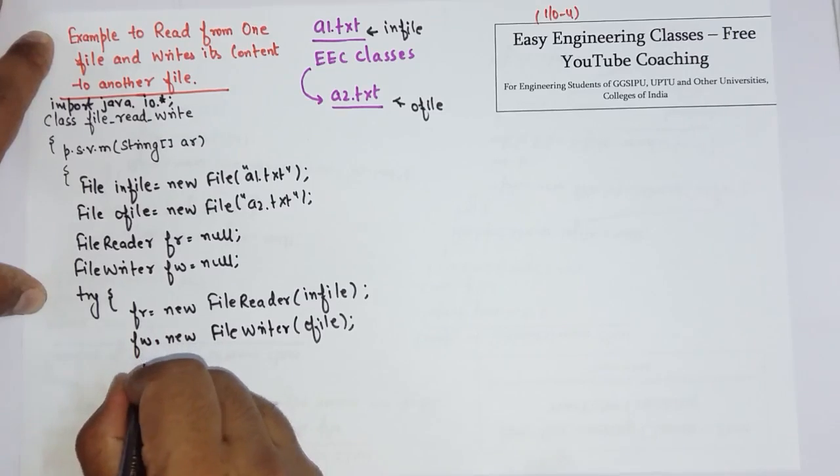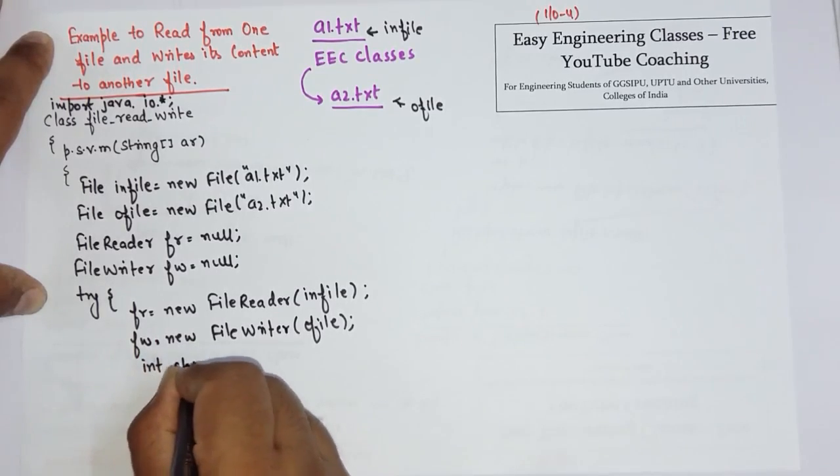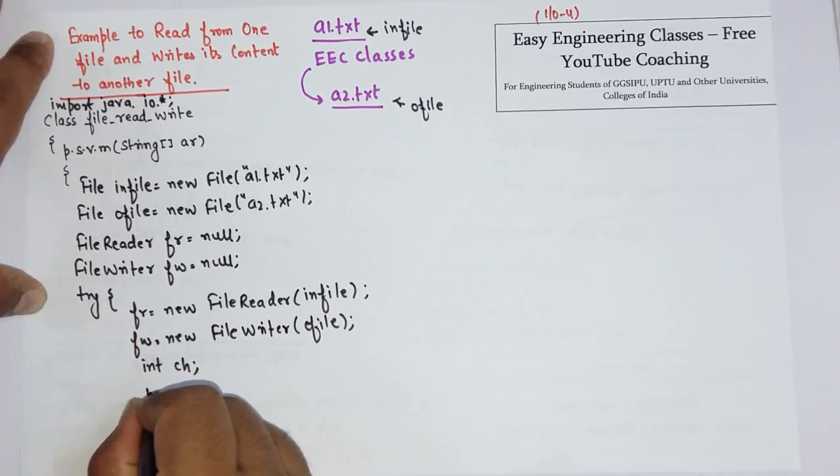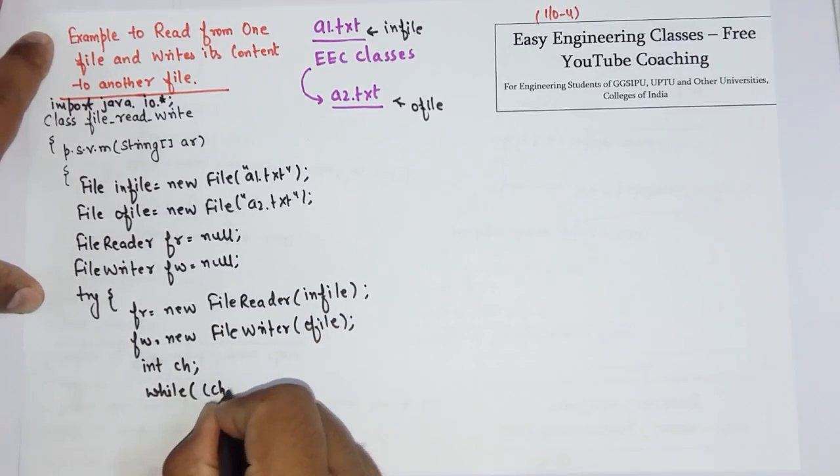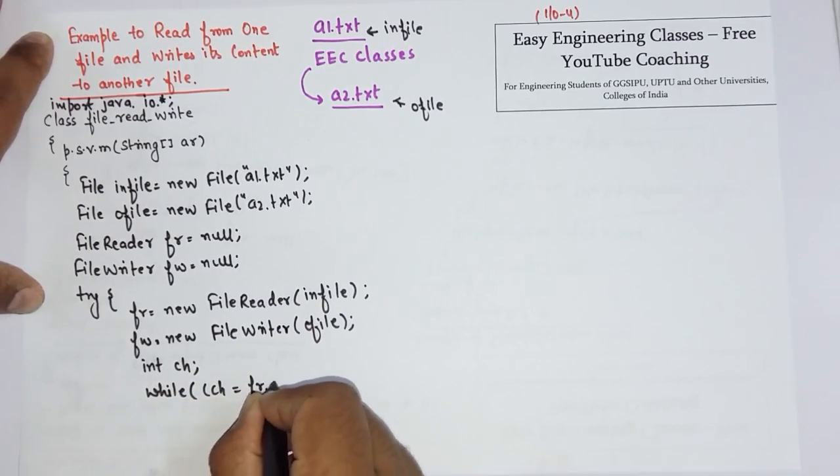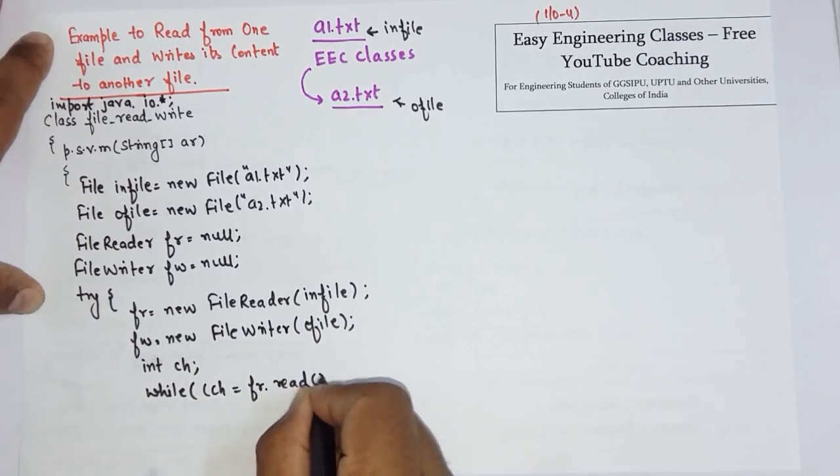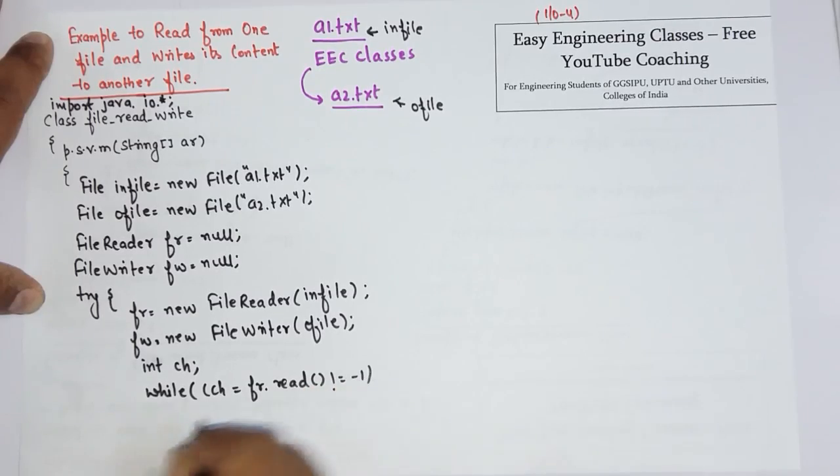This is done. Now create a variable of character type. Now let's start reading from the in-file object. So while ch equals fr.read() not equals to minus one...